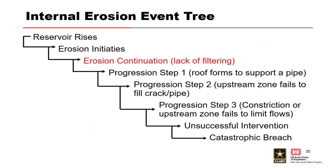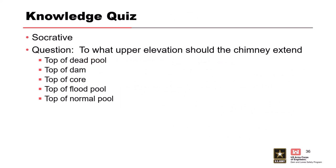From a risk standpoint, we build event trees to understand how a failure happens. In this one: the reservoir rises, erosion starts at a defect because we don't have a filter, and erosion continues. If you have a chimney, you've just stopped it right there. Without the filter, you move into a clay material forming a pipe — the pipe gets bigger and longer, no upstream material to choke it off, no constriction, water volume increases, you can't intervene, and you get a breach. That shows how early in the process the chimney comes into play.